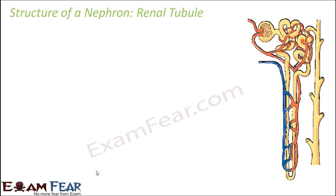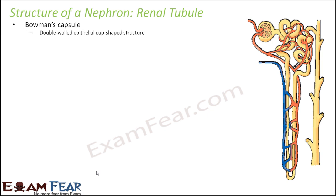Let us look at the different parts of the renal tubule. The first part is the Bowman's capsule. Capsule means a covering, so it is the covering of the glomerulus. Capsule should always remind you of a covering. So this is going to cover your glomerulus, and it is a double-walled epithelial cup-shaped structure.